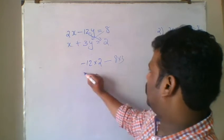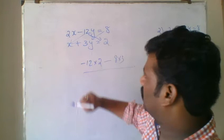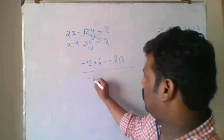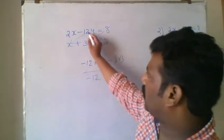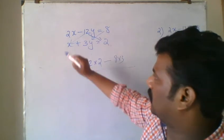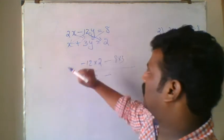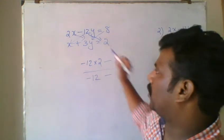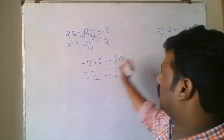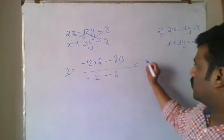2 to 3 divided by 12. Minus 12, 12 into coefficient of x. Here coefficient of y is minus 12 minus 2 into 3. This is the value of x, so we can solve this equation minus 24.